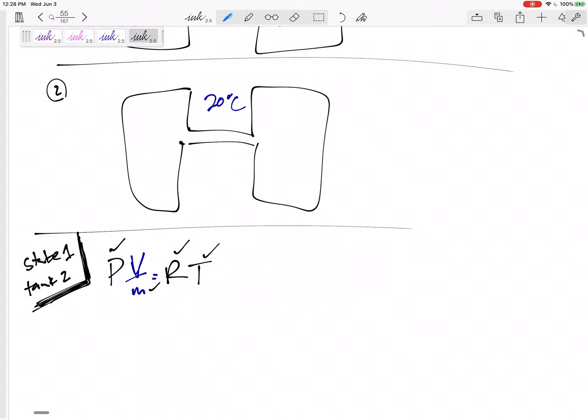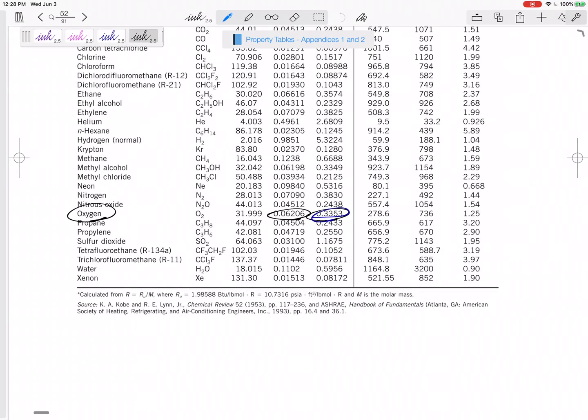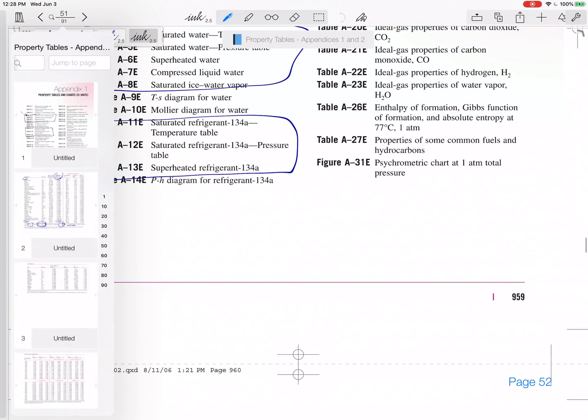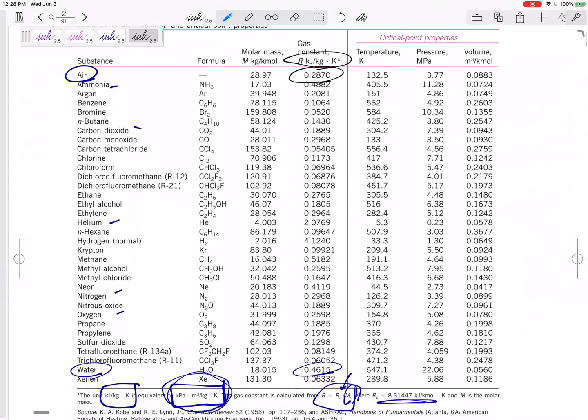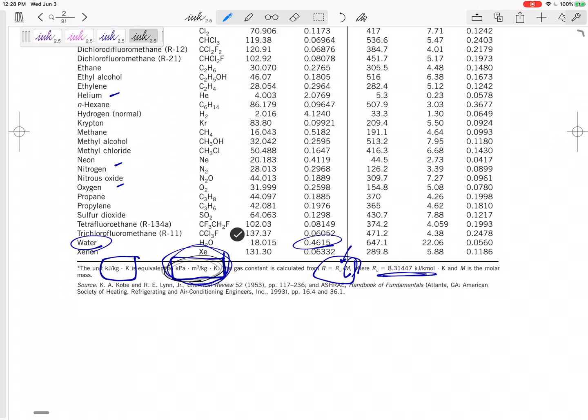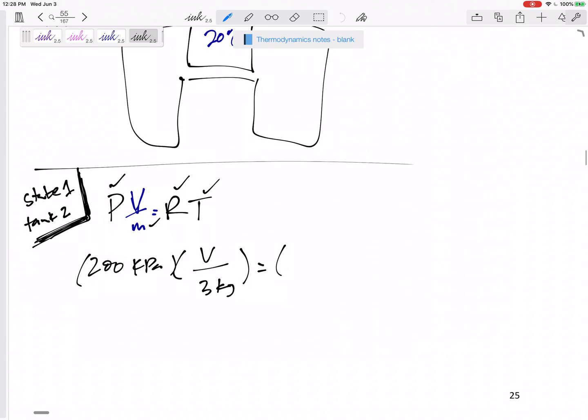All right, so the pressure 200 kPa, the volume I don't know, the mass 3 kg. The R, let me go to table A1 for air. The gas constant is 0.2870. Now instead of using those units, I'm going to use these units which are the same. So 0.2870 kPa·m³/kg·K.